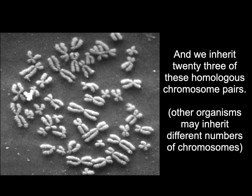Here's a whole boatload of chromosomes. We inherit 23 pairs of chromosomes from our parents, so humans have 23 pairs. Other organisms might have more or less. The number of chromosomes you have doesn't make you a more or less intelligent creature or give you more features. There are some worms that have way more than 23 chromosomes, and some very intelligent creatures that have more or fewer than us. It just depends on the creature and what's happened evolutionarily with their genome. Humans have 23.